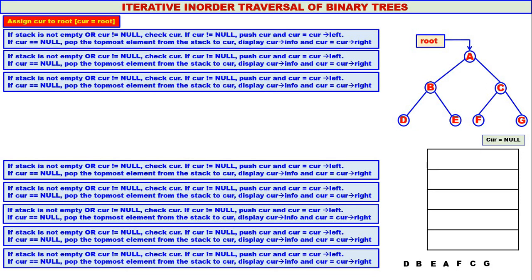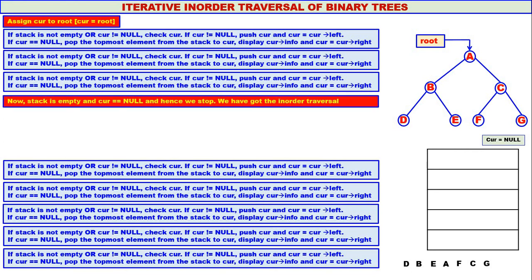Now you can observe: the stack has become empty and curry is also equal to null. When both conditions fail, we come out and stop. We have got the inorder traversal. The inorder traversal for the given binary tree is D, B, E, A, F, C, G.